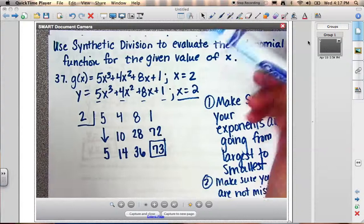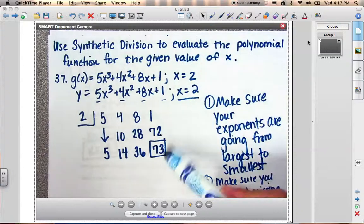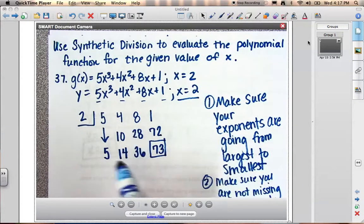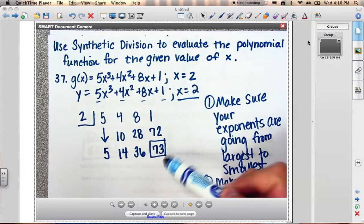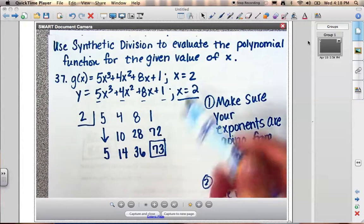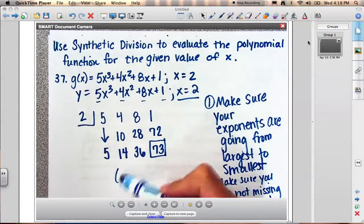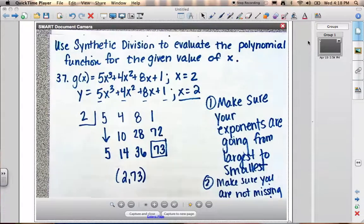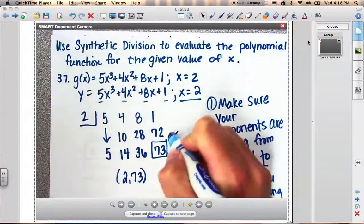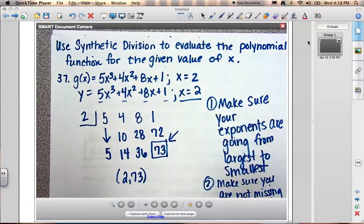So what that teaches us is, instead of doing the direct substitution, I can do this shortcut called synthetic division. So that means when I evaluate at the value of x equals 2, I get 73. So that means that an ordered pair would be 2 comma 73 on this function. However, once again, if I'm just asking you to evaluate, your answer would be 73.